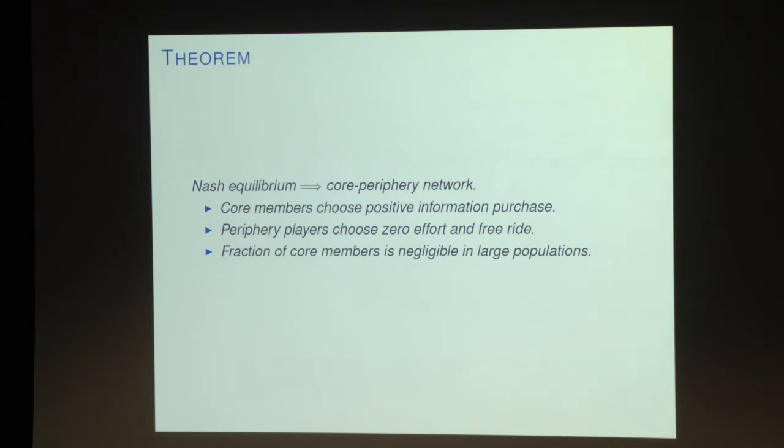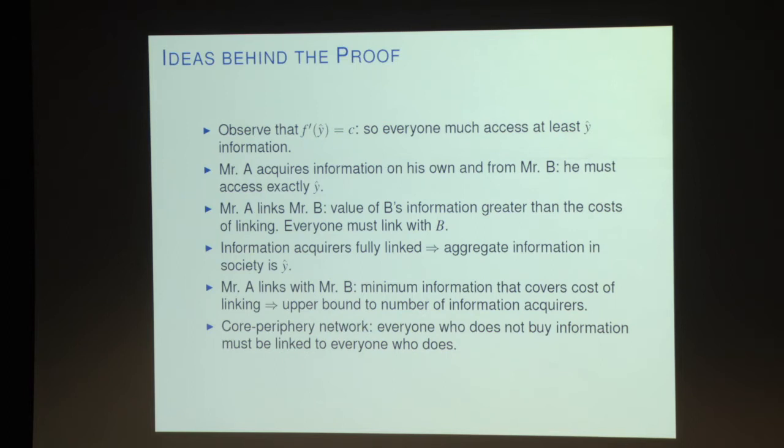So we've completed the argument: we have a core group, everyone's linked to the core group, and the core group puts together y-hat. The fraction of core members is negligible — this follows because if you're going to link with Alain you pay k and he must be buying a certain minimum amount of information. We know total information is y-hat, and since each core member buys a minimum amount, we have an upper bound on the number of people buying information that is independent of the size of society. Therefore the core shrinks as the population grows.